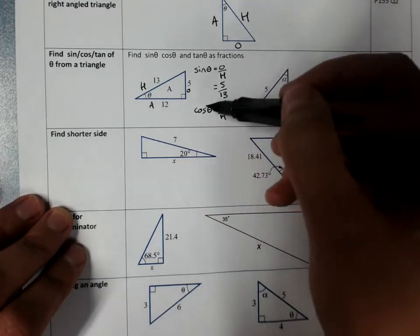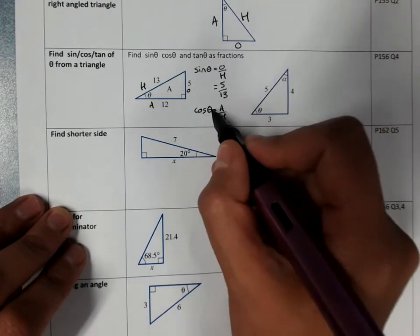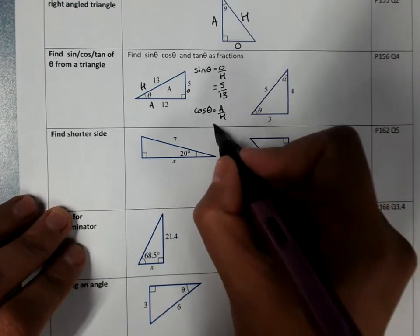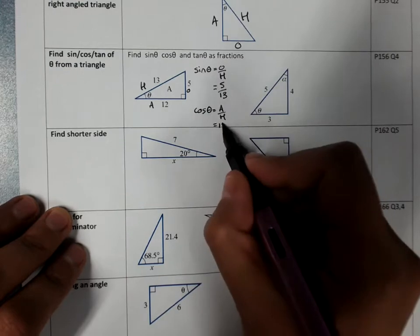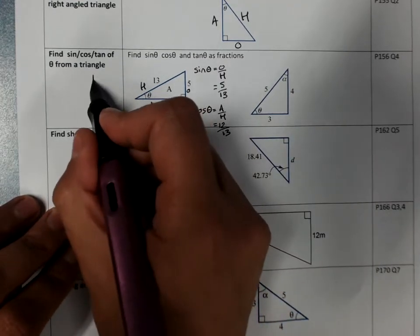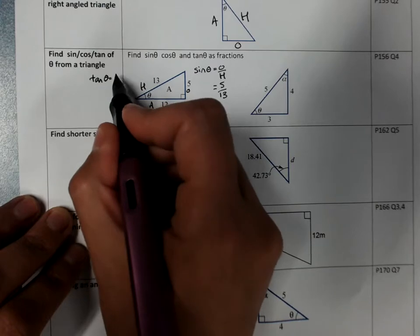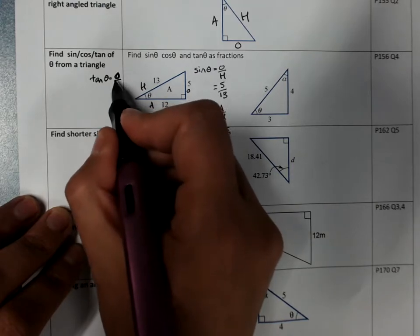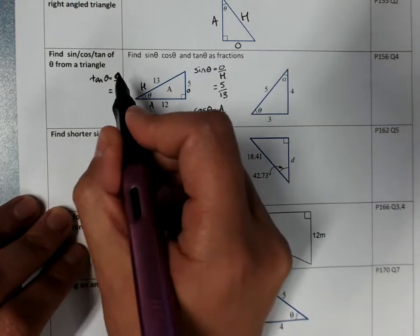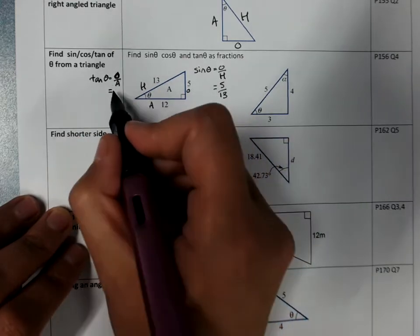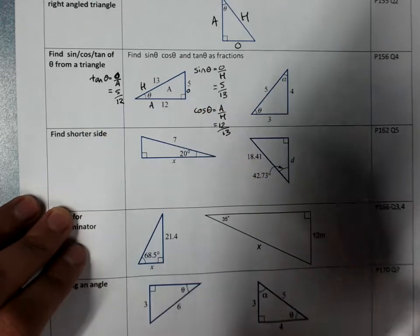If you need the ratio, write the full ratio, including theta. 12 over 13. I'm going to run out of space here. Tan of the angle is opposite over adjacent. 5 over 12.